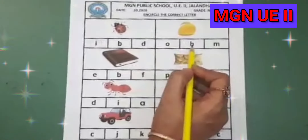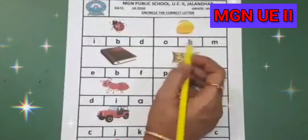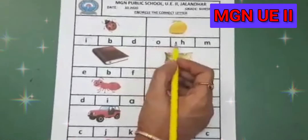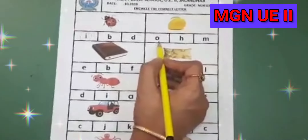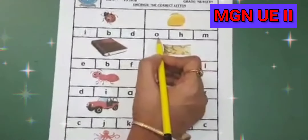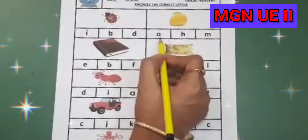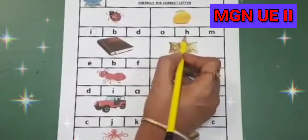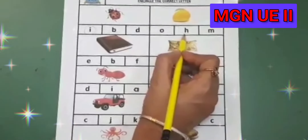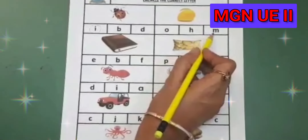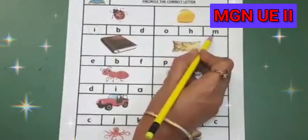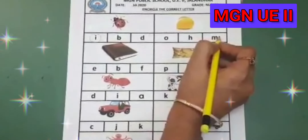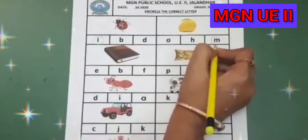Ma'am has written three alphabets. Now let's search for letter M. This is letter M? No, this is not letter M. This is letter M? No, this is not letter M. This is letter M? Yes, this is letter M. So let's circle it.